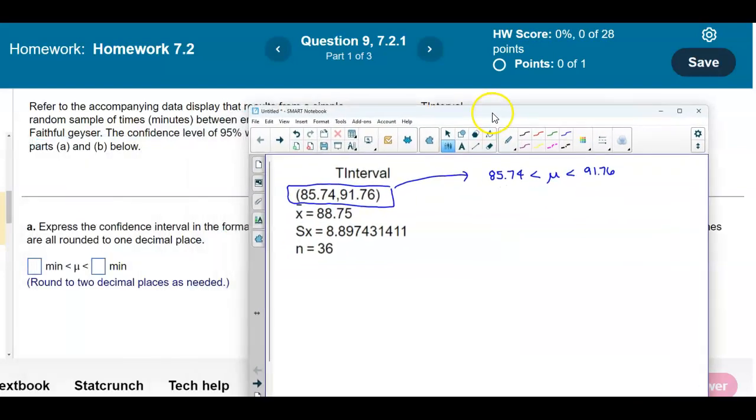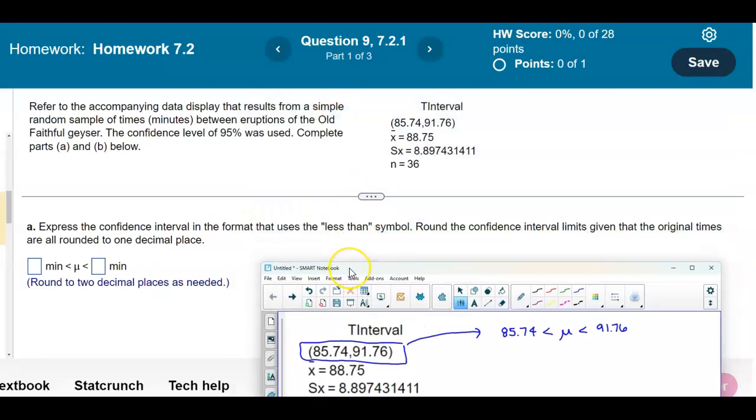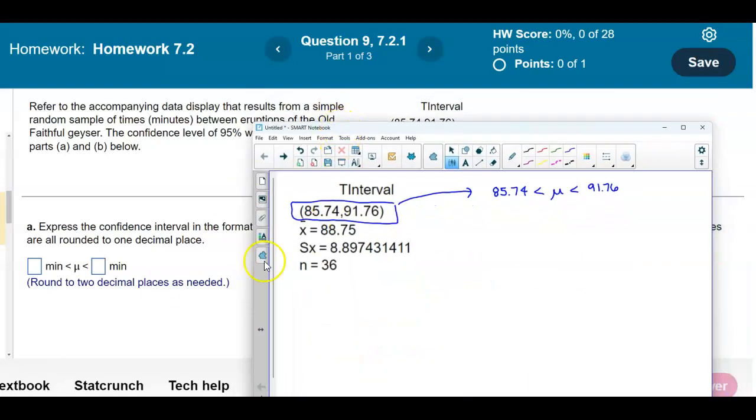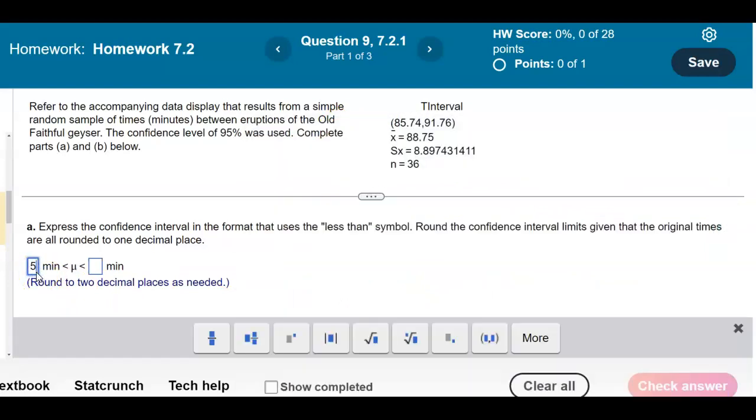Now in the question it's asking us to round it to two decimal places. So rounding it to two decimal places gives us the following: the lower limit is 85.74 and the upper limit is 91.76.